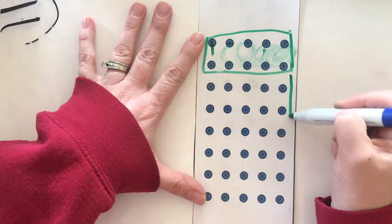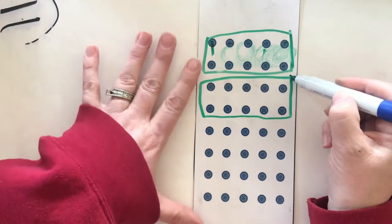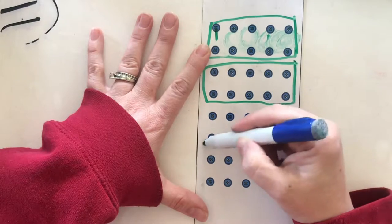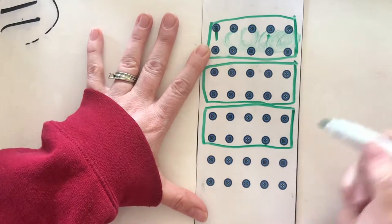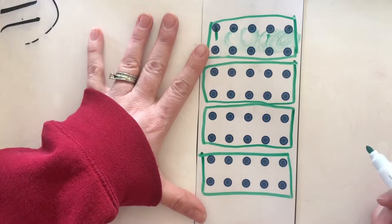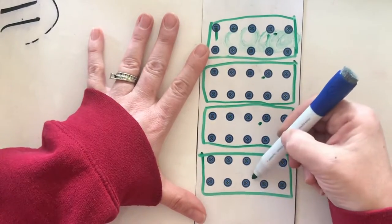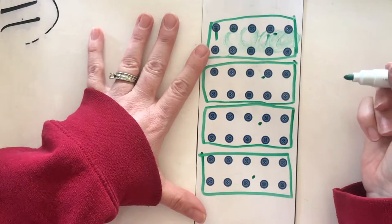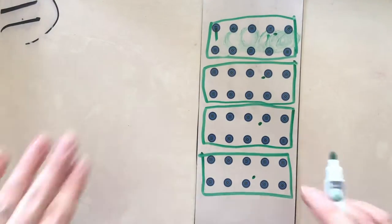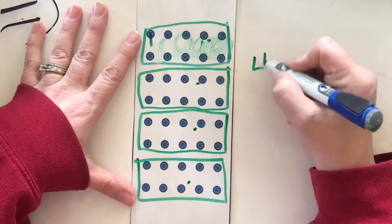I can do the same thing here — here's another group of ten: one, two, three, four, five, they each have a partner. Here is another group of ten, and one more group of ten. So here I have one, two, three, four groups of ten.